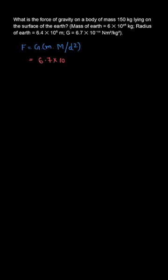The small m is the mass of the object, 150 kg, and capital M is the mass of the earth, 6 × 10²⁴ kg. D is the distance between the centers of the two objects, 6.4 × 10⁶ meters, which is the radius of the earth as the object is placed on the surface.